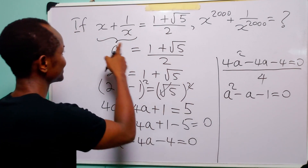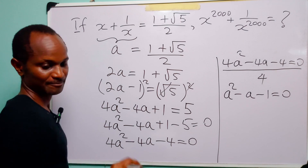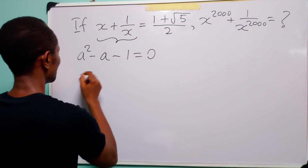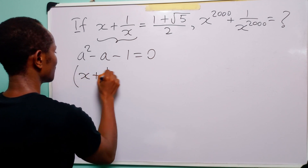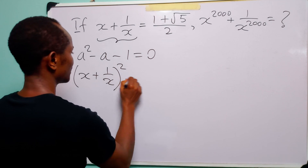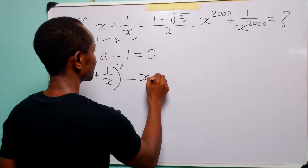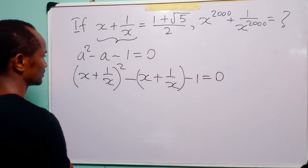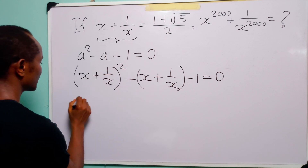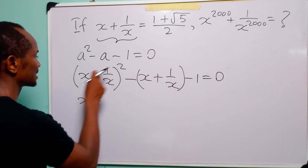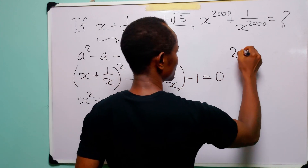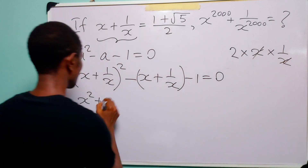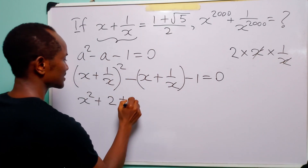Let us remember that A is equal to x plus 1 over x. So when we substitute x plus 1 over x for A in this equation, we have (x plus 1 over x) squared minus (x plus 1 over x) minus 1 is equal to 0. Expanding the square, we get x squared plus 2 times x times 1 over x, which simplifies to 2, plus 1 over x squared.